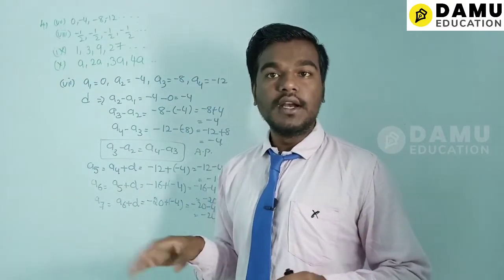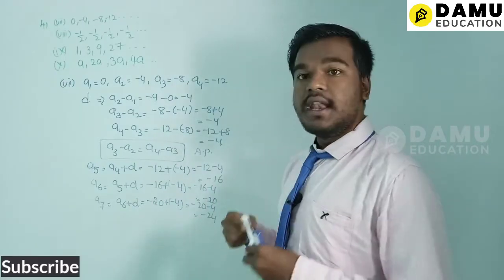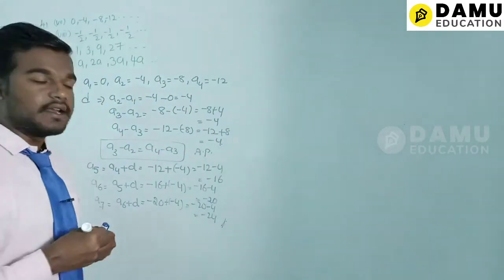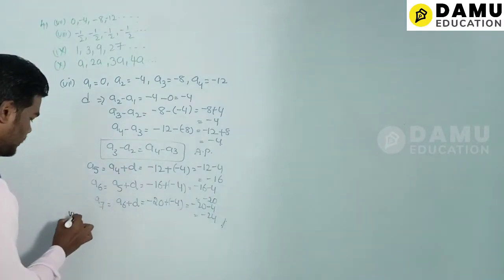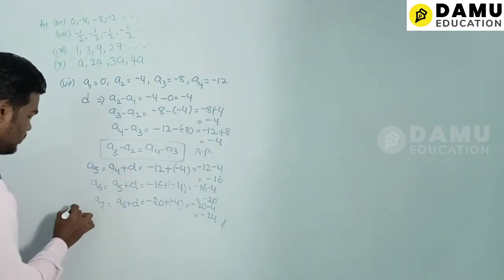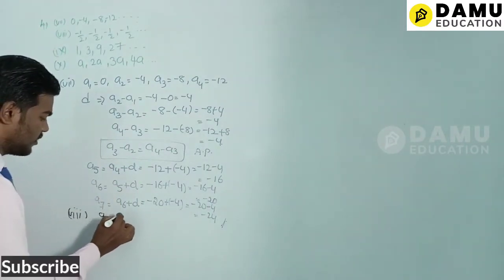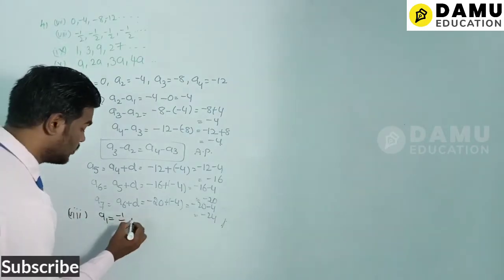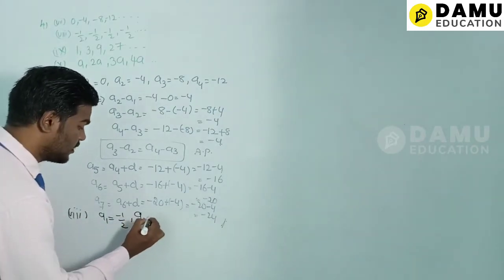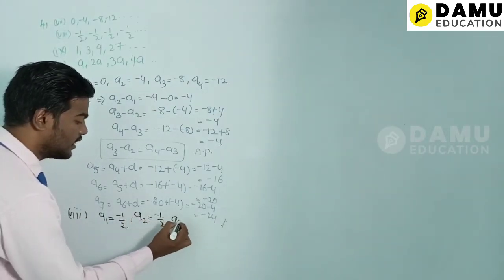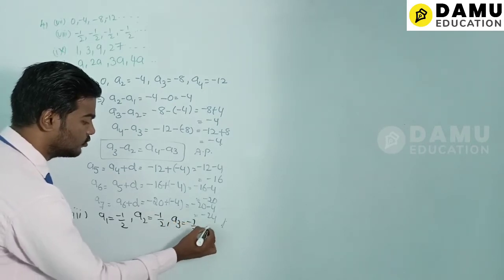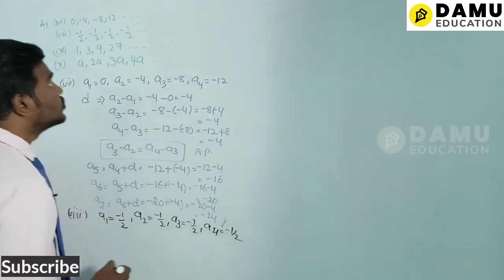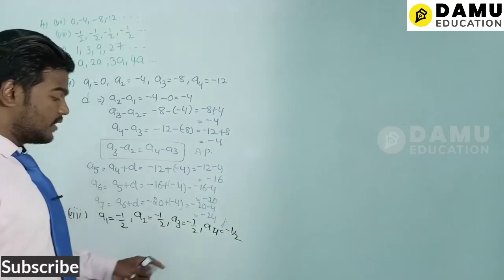For the eighth series: a1 = −1/2, a2 = −1/2, a3 = −1/2, a4 = −1/2. All terms are equal.